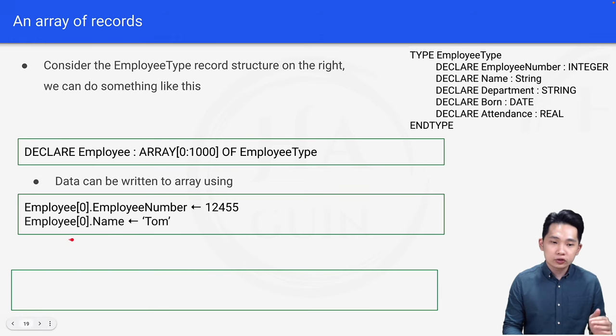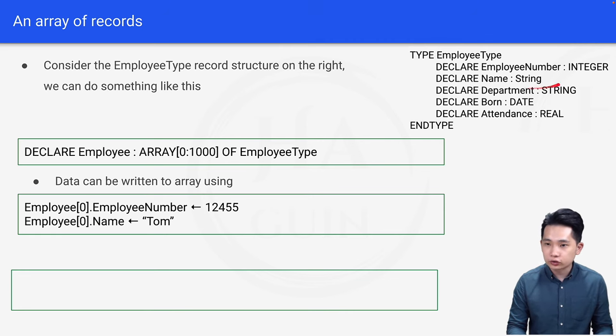And next, Employee[0].Name ← 'Tom'. So as usual, this is the first element of the array and dot Name. So let's look at Name. So Name is a string. Therefore, we'll assign a string which is Tom here.